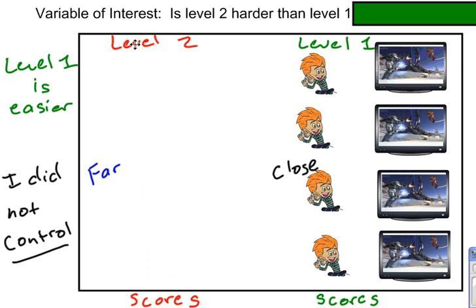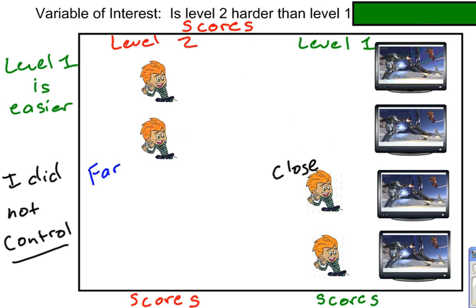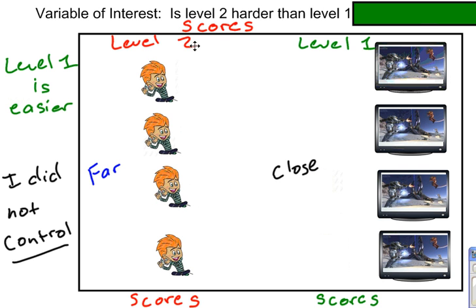So now let's go back to the confounding variable. The variable of interest is their score. What I really wanted to look at is their scores. But I added an extra variable in there that I should not have. And that is the distance that they sat away from the television when they played level 1 and level 2. So the distance turns out to be a confounding variable.